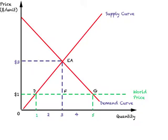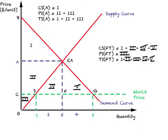When you move from autarky to a situation where the country starts to import, the supply of this product has scaled back because of cheaper imports — so production has fallen, and chances are employment in this industry has fallen as well. What has happened to demand? When we compare free trade with autarky, demand has increased from three to five units. Since demand is greater than supply, the difference is the imports by this country.